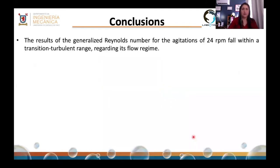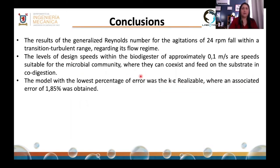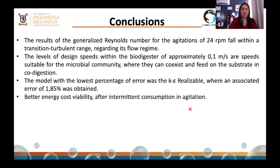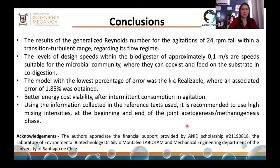Conclusions: the generalized Reynolds number for 24 RPM agitation falls within the turbulent transition range. Velocities within the biodigester are adequate for the microbial community to coexist and feed on substrate during co-digestion. The realizable K-Epsilon model had the lowest error percentage at 1.85%. Intermittent agitation provides energy savings — it is recommended to use high mixing intensity at the beginning and end of the acetogenesis and methanogenesis phases. Acknowledgments to ANID for the national doctoral scholarship, to Laboratorio de Biotecnología Ambiental Dr. Silvio Montalvo, and to the Department of Mechanical Engineering, University of Santiago de Chile.